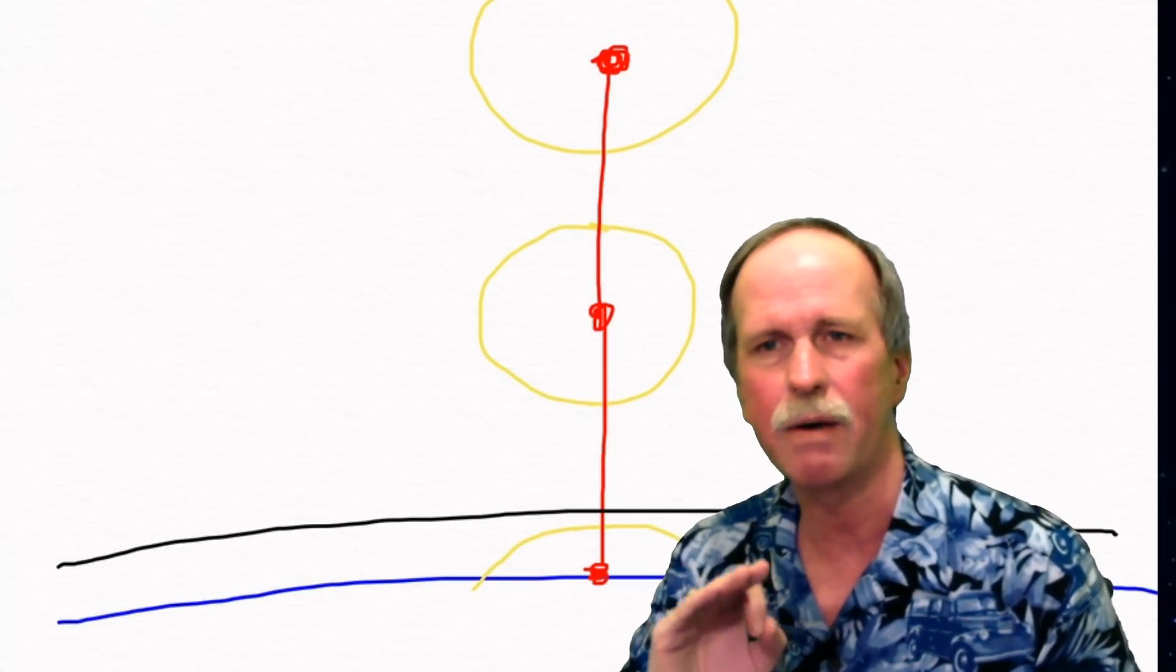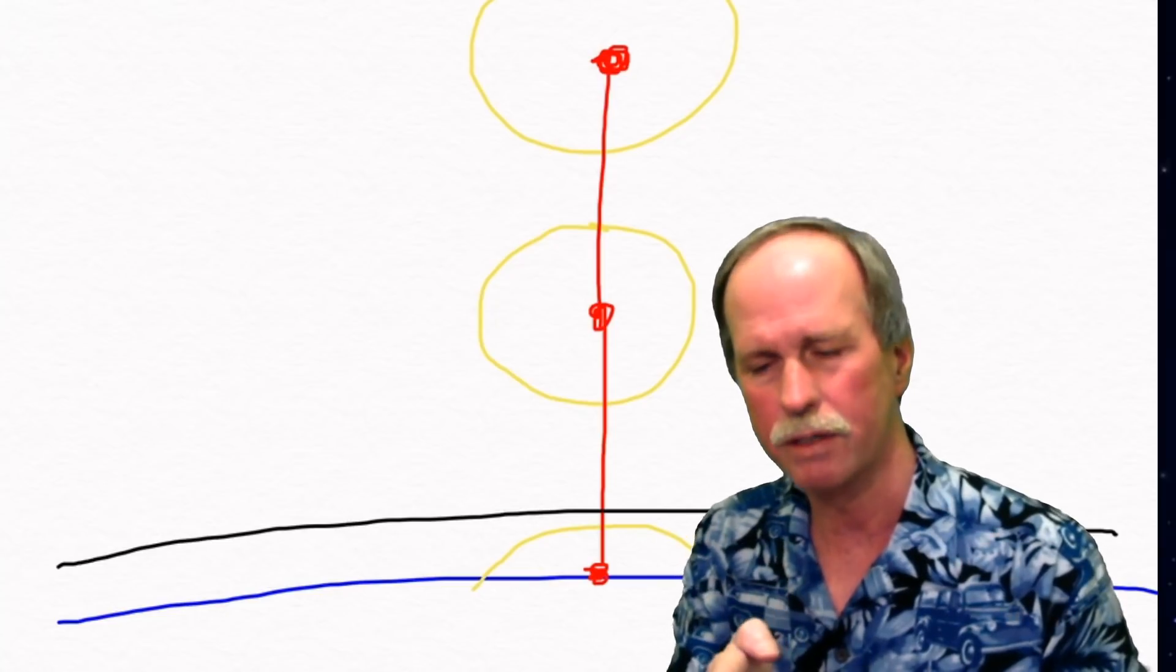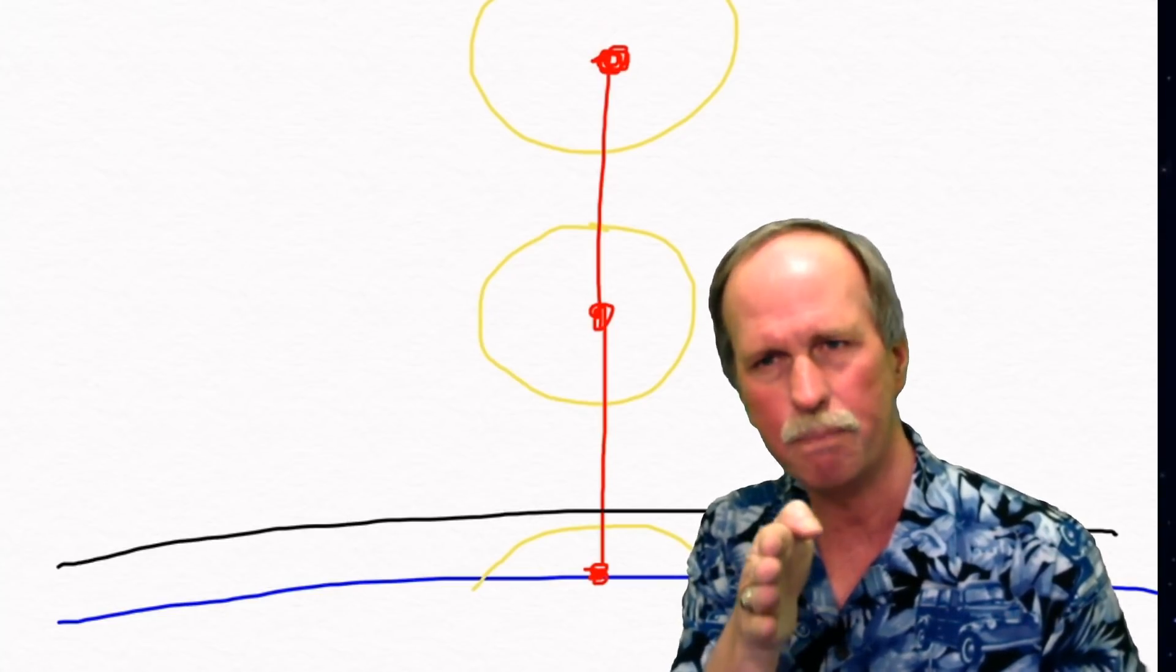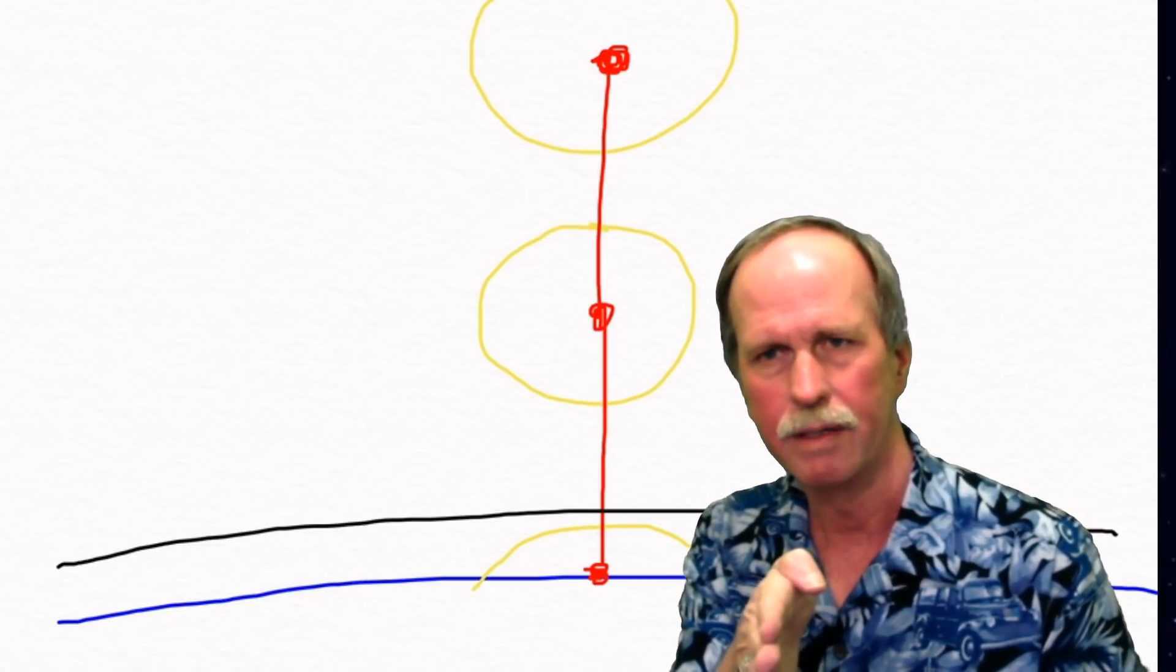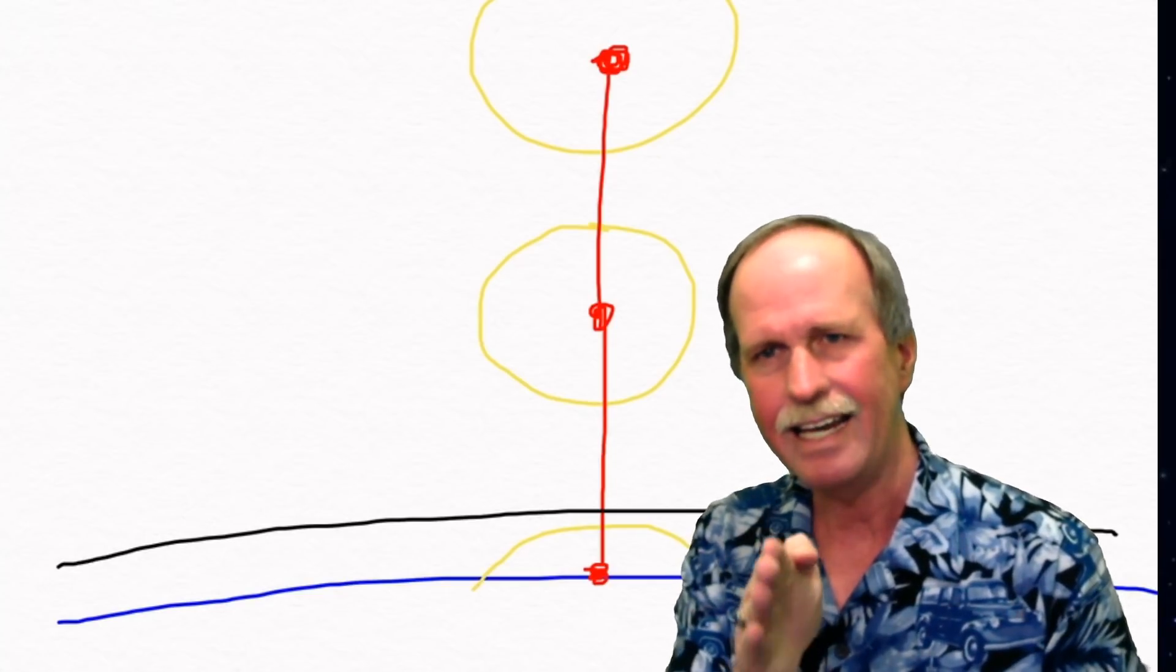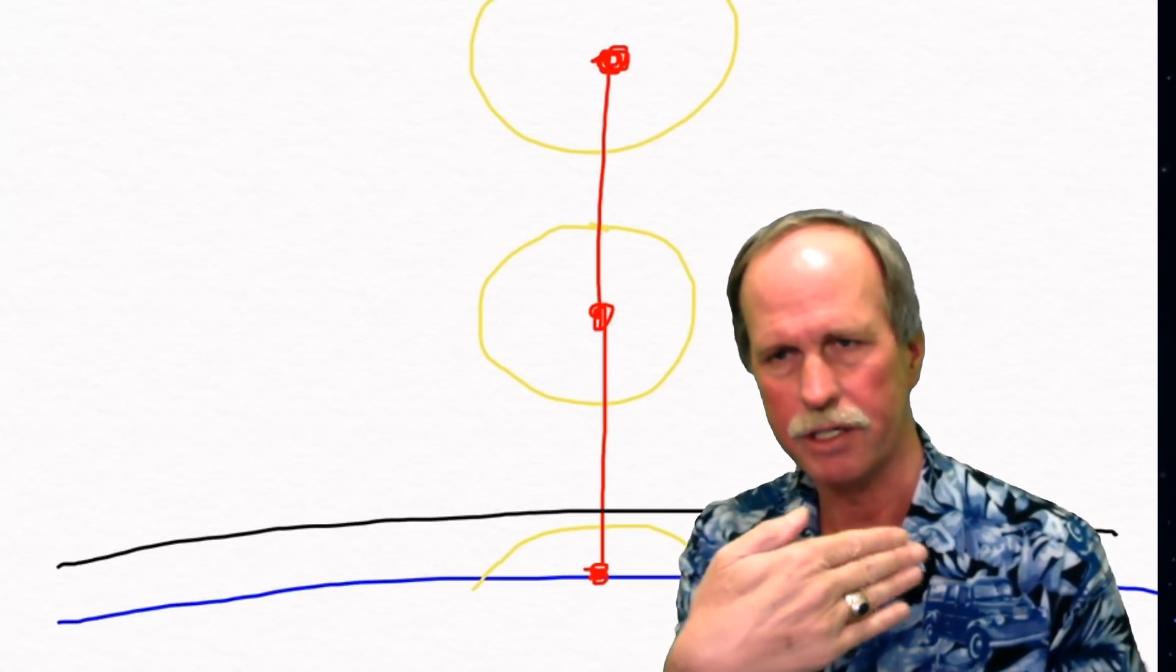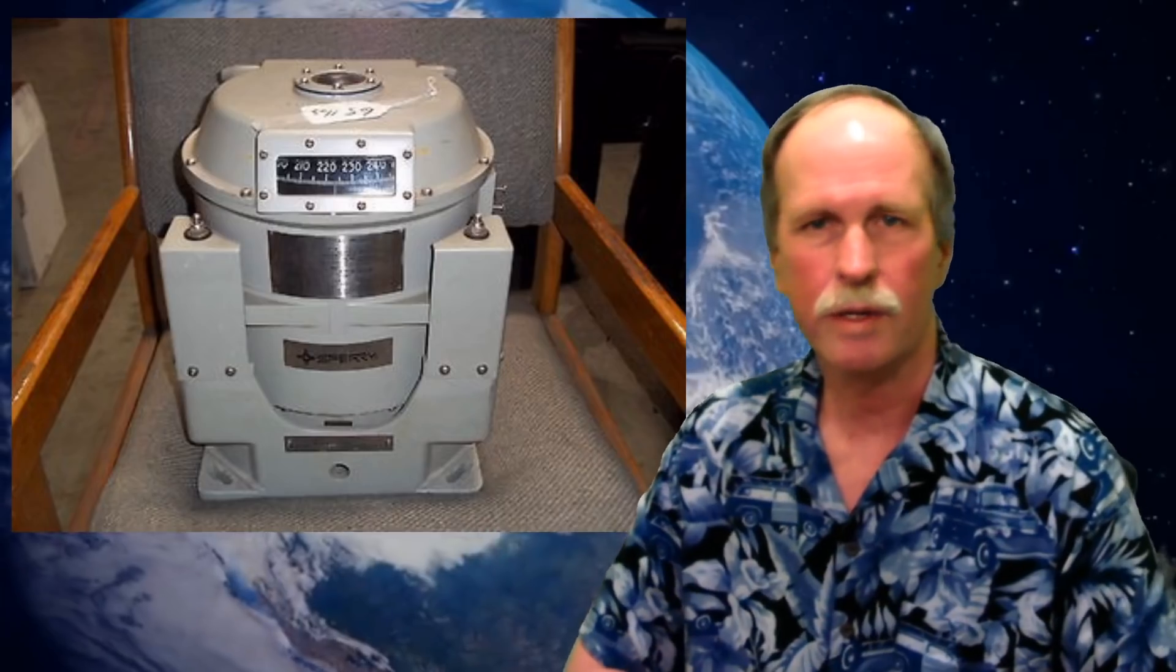The only time that that will not occur is if, by some miracle, you manage to get the gyrocompass aligned perfectly with the south pole on the southern part of the north-south rotational axis. Any other position will cause that gyrocompass to rotate until it points to the geographic north pole.